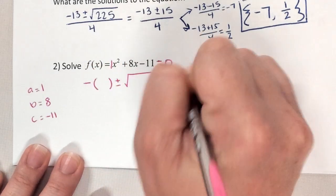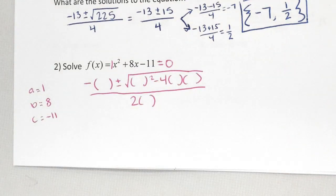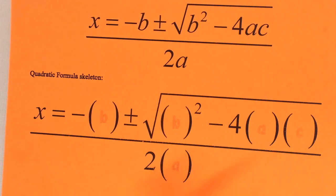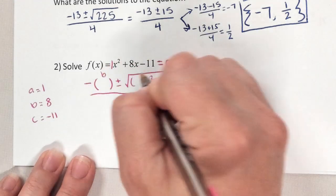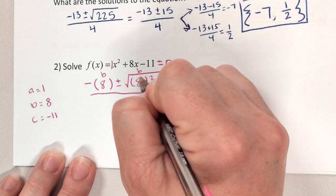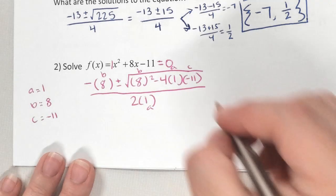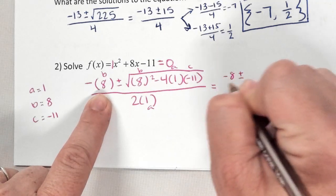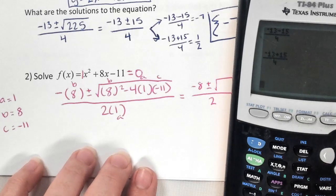Every time I write a letter I put parentheses so I can plug it in. This is the skeleton — it has the bones but not the meat. B is 8, which goes here and here. A is 1, which goes here and here. C is negative 11. We simplify the three pieces. The first piece, negative B, becomes negative 8. The denominator becomes 2, since 2 times 1 is 2. Then I type just the discriminant: 8 squared minus 4 times 1 times negative 11, which gives me 108.